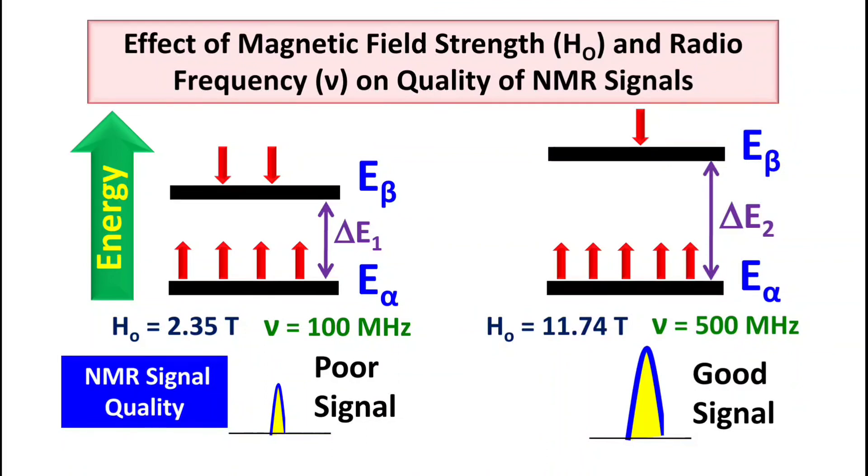So if you are looking for good NMR spectra, you have to always use higher value of radio frequency and higher magnetic field strength. This is all about H1 NMR spectroscopy principle in terms of quantum mechanical approach.